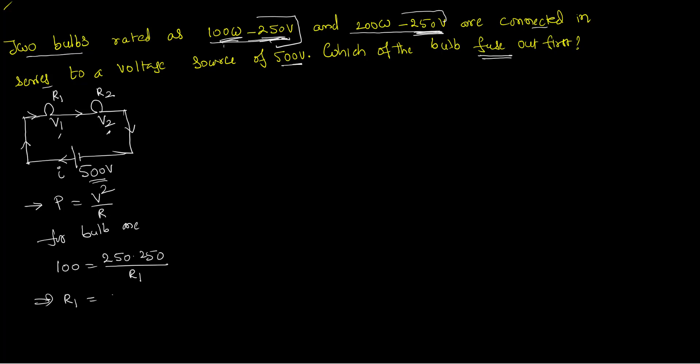So what is the resistance R1? 250 into 250 by 100. Getting this 100 into the denominator. This zero gets cancelled. 25 and 25 is 625 ohms. So the first bulb has a resistance.